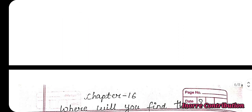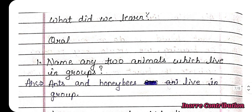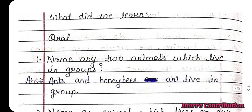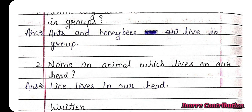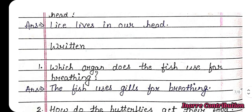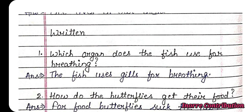What did we learn? Oral questions — first, name any two animals which live in groups: ants and honey bees live in groups. Second, name an animal which lives on our head: lice live on our head. Review question: which organ does the fish use for breathing? The fish uses gills for breathing.